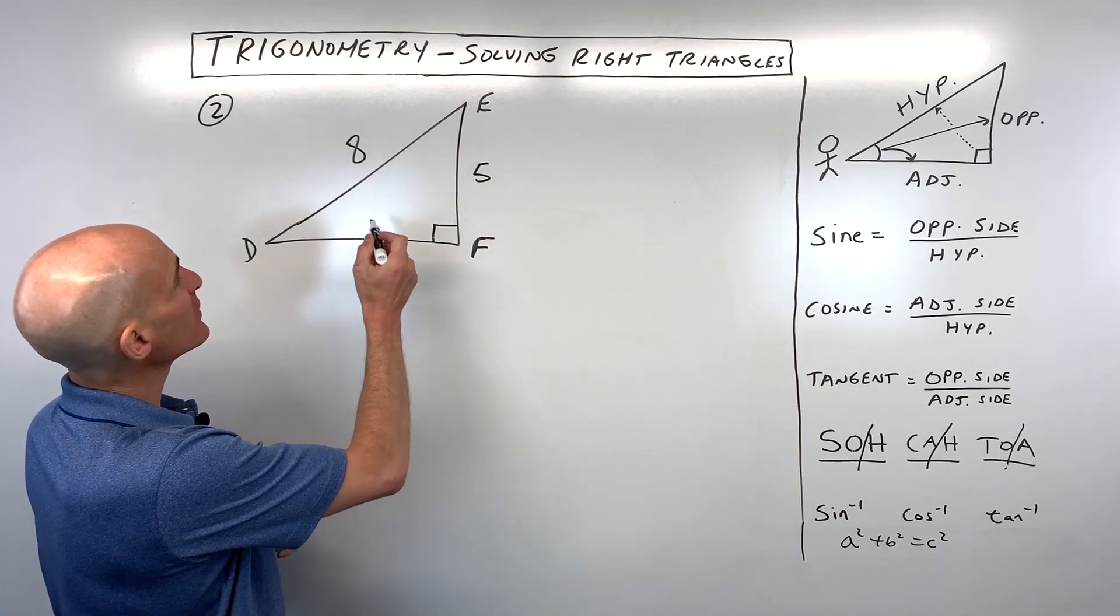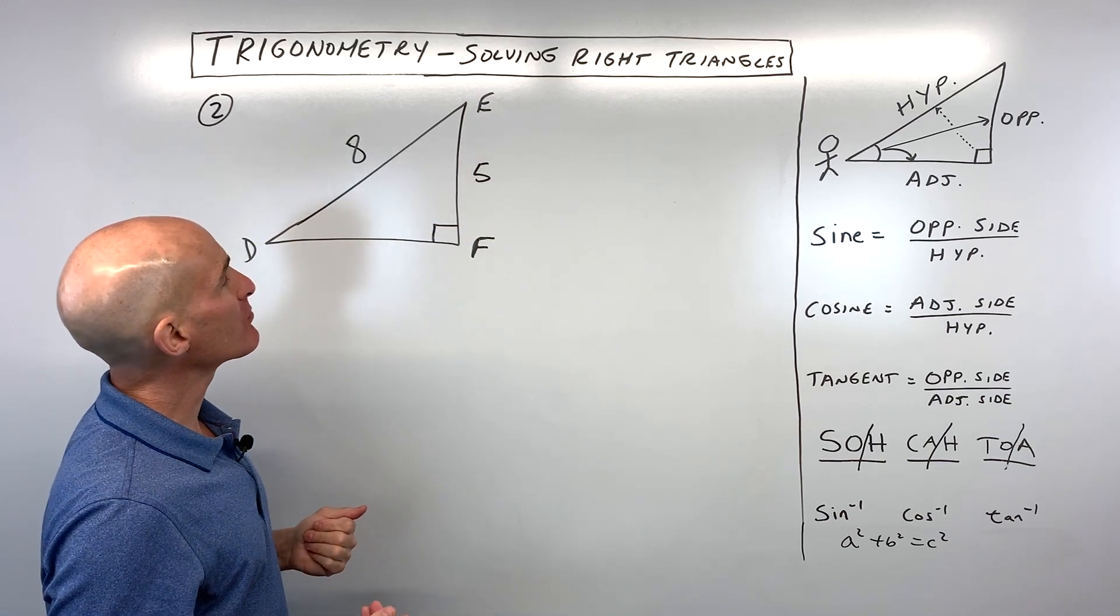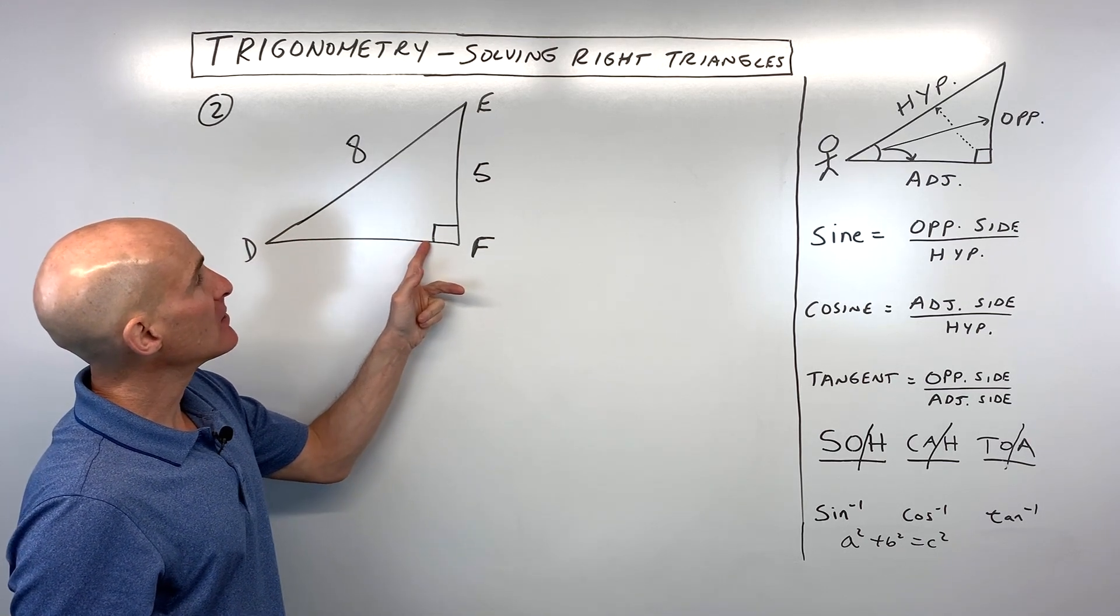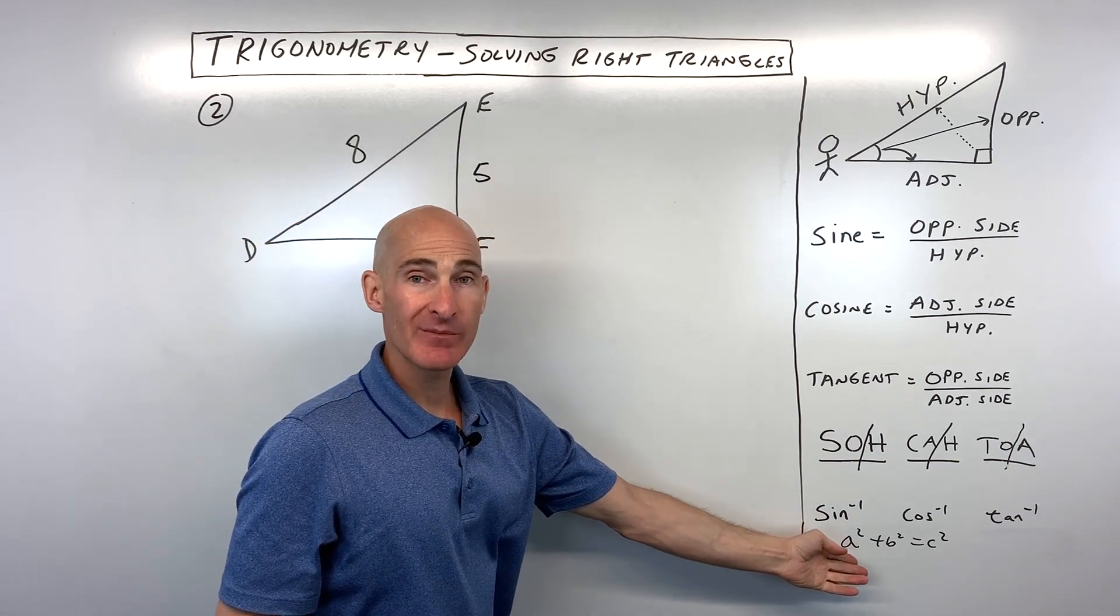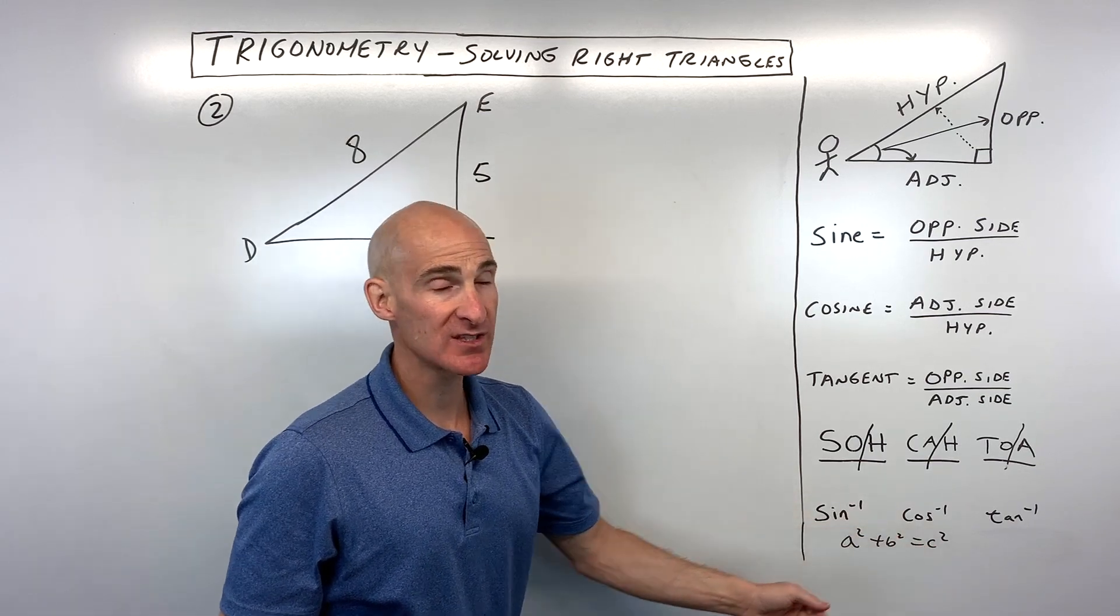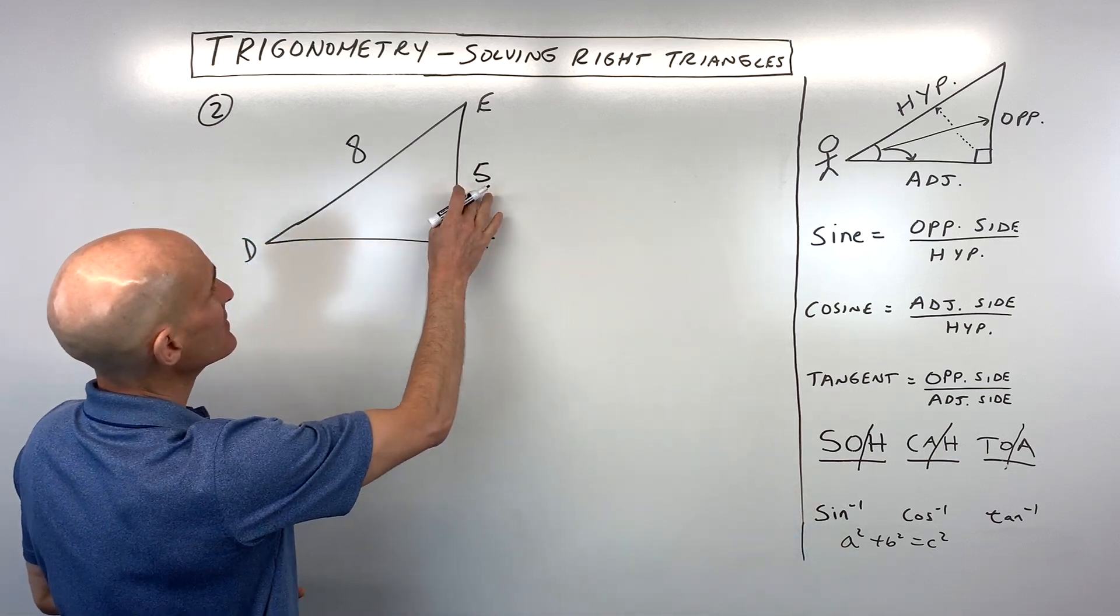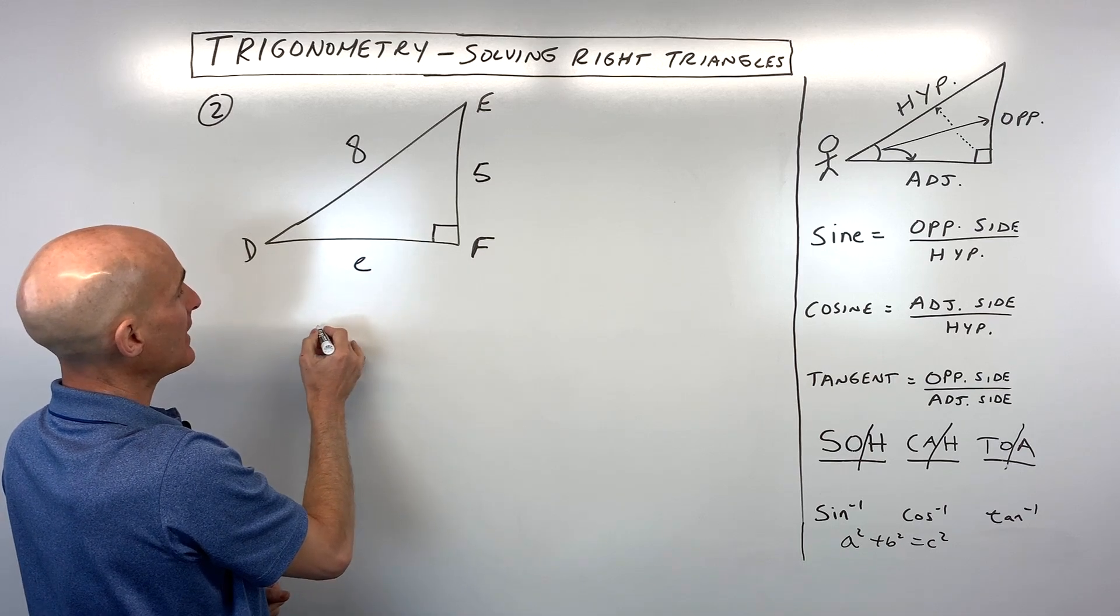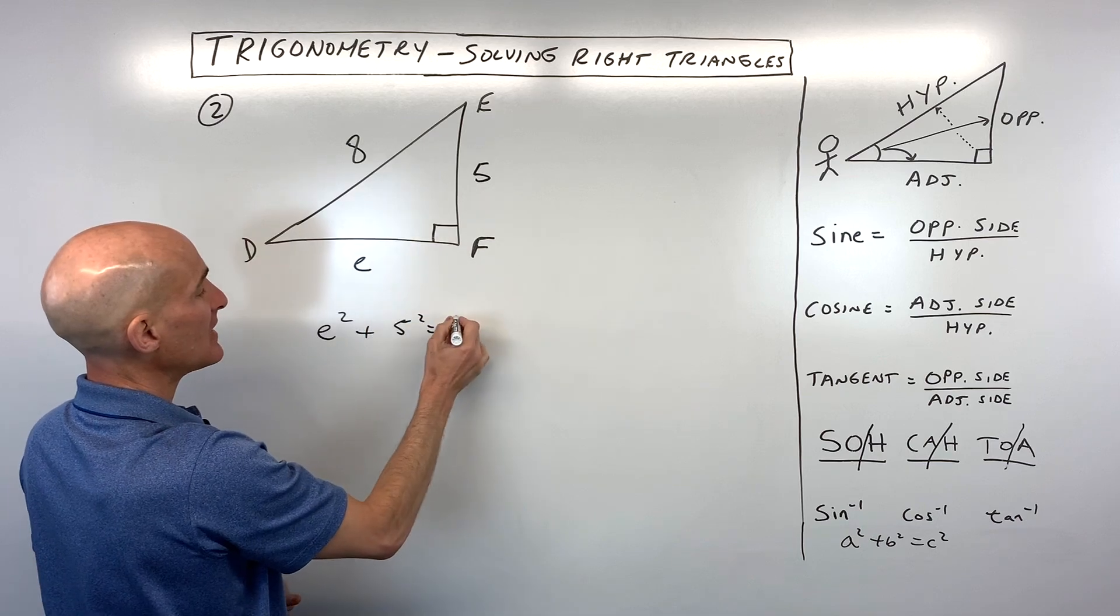For number two, we're given the side lengths, but we're not given any of the acute angle measures. So how should we approach this? Well, let's go ahead and solve for this missing side here first. Because we're given two sides in a right triangle and we want to find that third side, here's where the famous Pythagorean theorem comes into play. A squared plus B squared equals C squared. So this is our hypotenuse, that's our C side in the Pythagorean theorem. This is your A and your B. So let's call this side E here since it's across from angle E. So we have E squared plus 5 squared equals 8 squared.